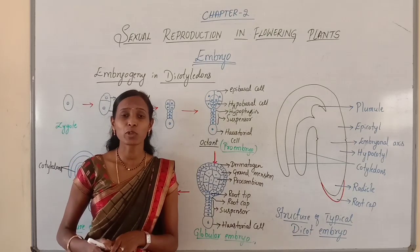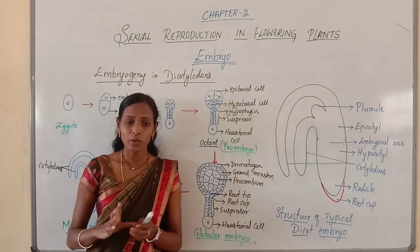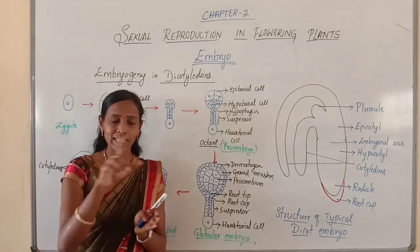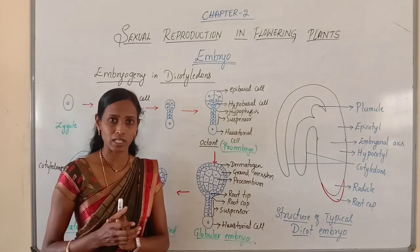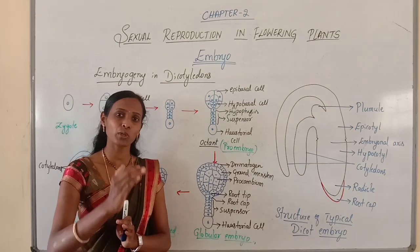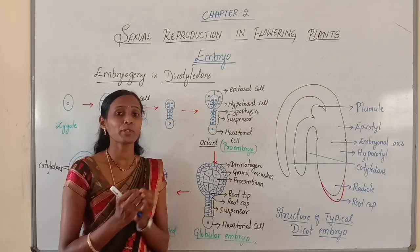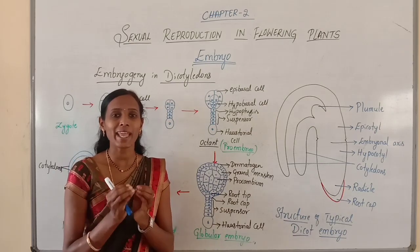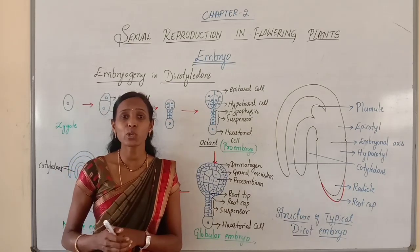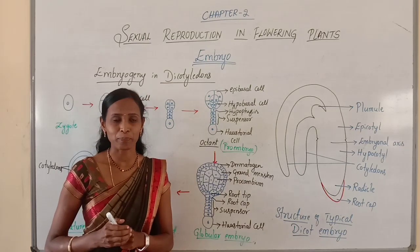Why is it called the endosporophytic plant? When you study life cycles in the plant kingdom, the zygote develops into embryo, and later the embryo develops into the sporophytic plant. That is why this embryo can be considered as the endosporophytic plant. We can also consider this embryo as the rudimentary plant — the immature plant present within the seed.